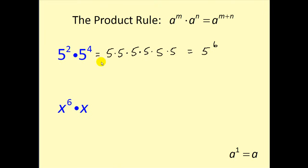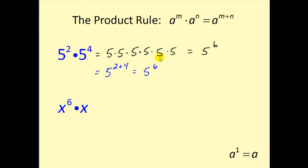If we take advantage of the product rule, it states that we can just take the exponents two and four and add them to get five to the sixth. This is obviously much shorter, but if you're not sure of a rule, it's always best to expand the exponents to find the product.